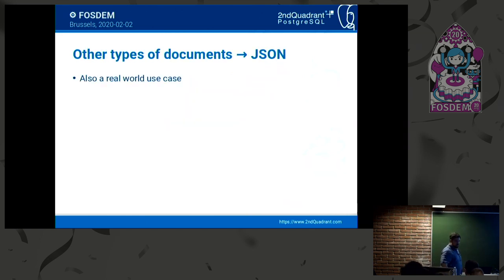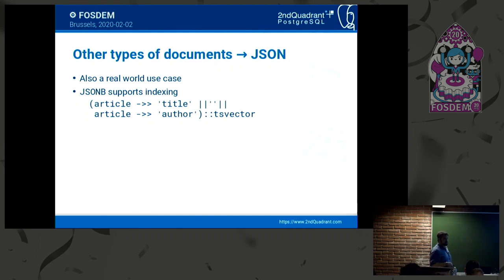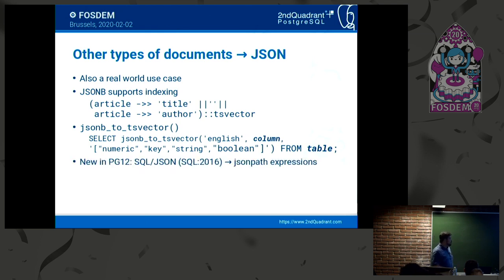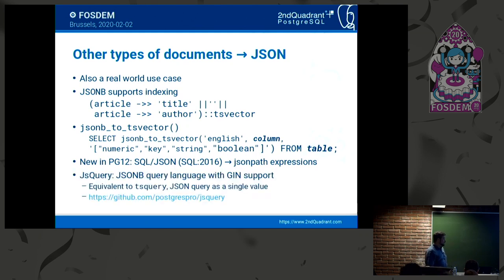We mentioned other types of documents such as JSON. It supports indexing and can be converted into tsvector using the function jsonb_to_tsvector. That will classify numeric keys, strings, and booleans differently if you want to. Also in Postgres 12, we have the SQL standard SQL/JSON query language that you can use to perform searches on JSON. We also have jsquery, which is a different query language.